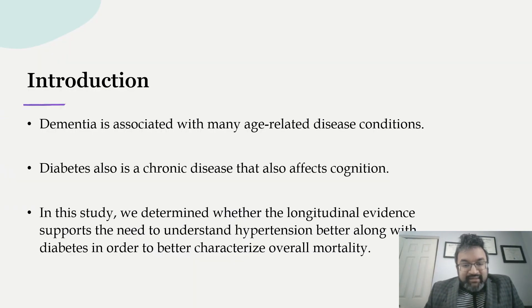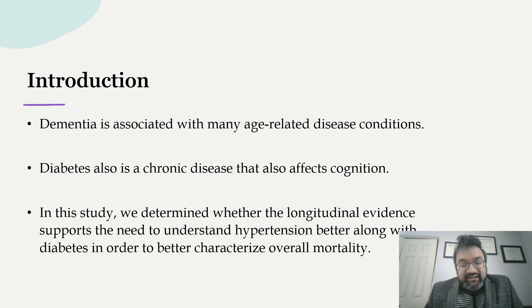Introduction. Dementia is associated with many age-related disease conditions. Diabetes is a chronic disease that also affects cognition. In this study, we were looking for longitudinal evidence supporting the need to better understand hypertension along with diabetes in order to better characterize overall mortality.